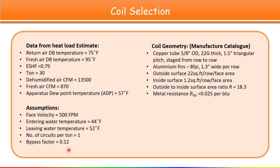Number of circuits per ton we assume as one. Bypass factor is 12% — this is the air which does not touch the coil and enters the room, called bypass air. As per AHRI (Air Conditioning, Heating and Refrigeration Institute), bypass factor should always be 10 to 15%, so I have taken the average value here.